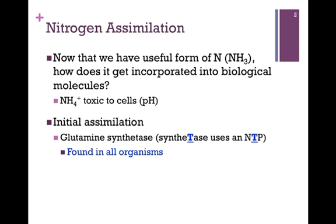We need a way to immediately assimilate this molecule as we absorb it. For this process of initial assimilation, we need the key enzyme, glutamine synthetase. Just a note on terminology: throughout this chapter, you'll see enzymes referred to sometimes as synthetases and sometimes as synthases. They are both biosynthetic enzymes. The distinction is that a synthetase, in the process of its reaction, uses a nucleotide triphosphate.